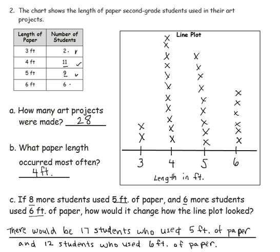And I've written that information in a sentence. There would be 17 students who used 5 feet of paper, and 12 students who used 6 feet of paper.